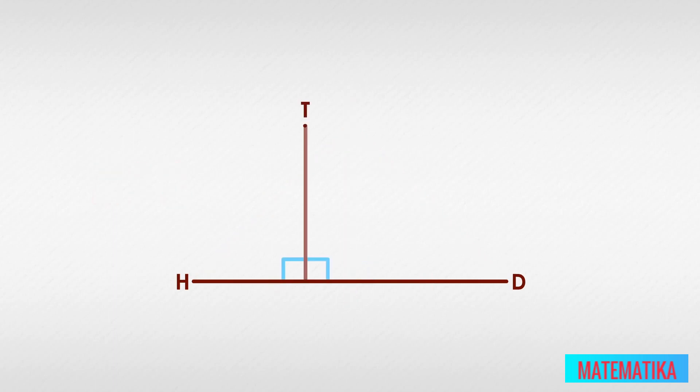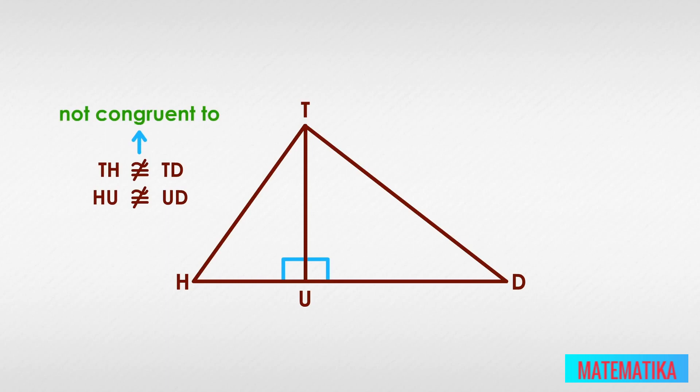If point T is not the same distance from points H and D, then HU is not congruent to UD. This symbol means not congruent to.